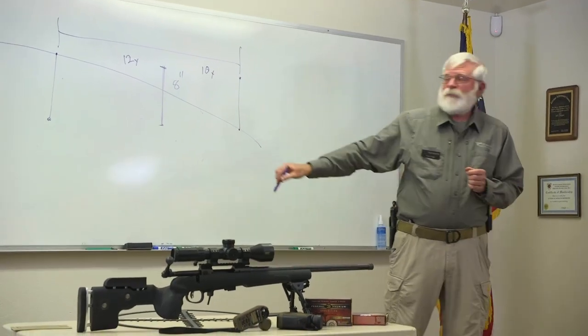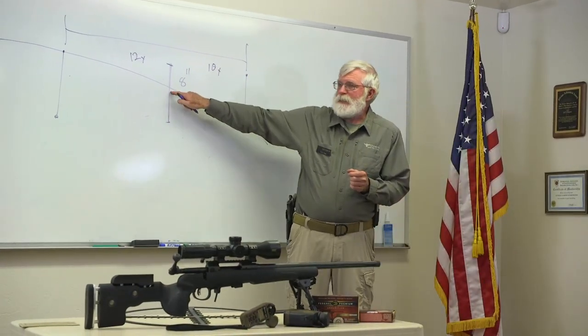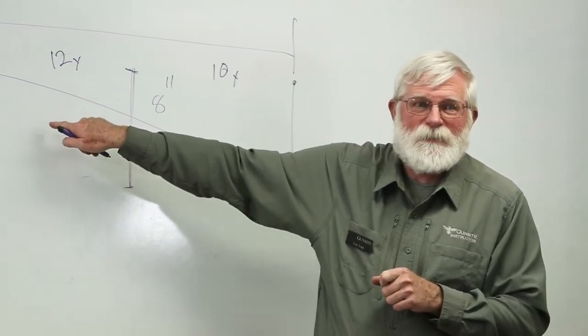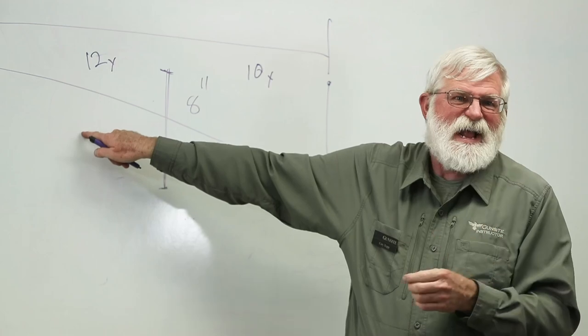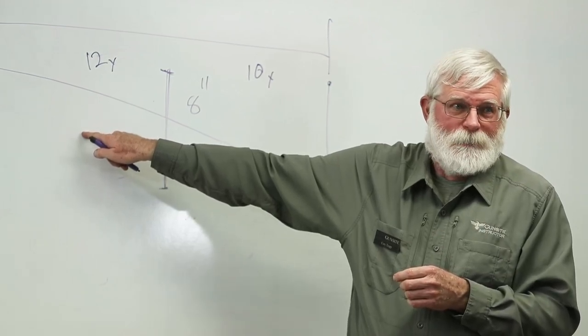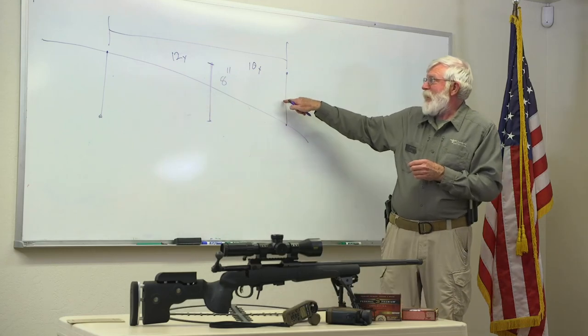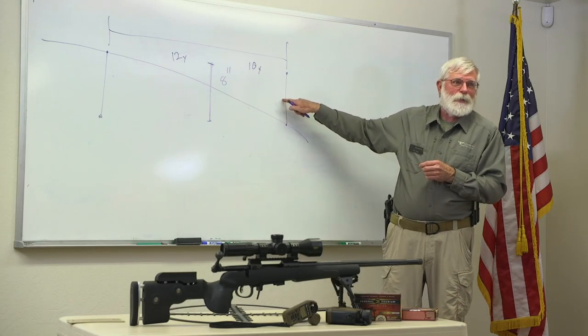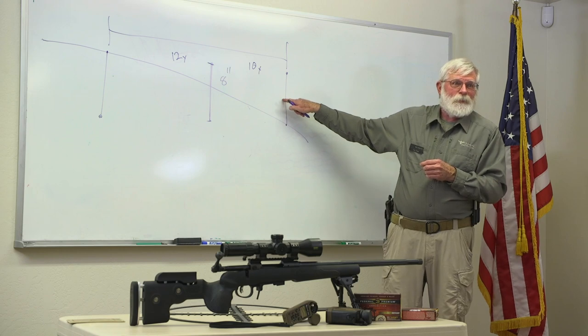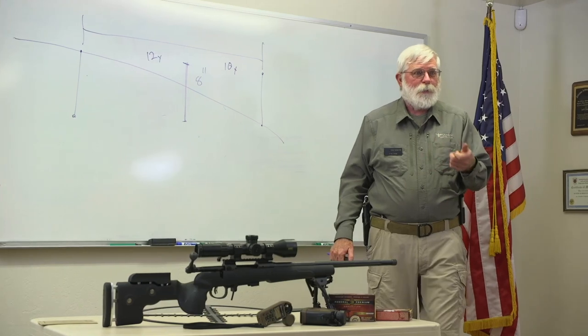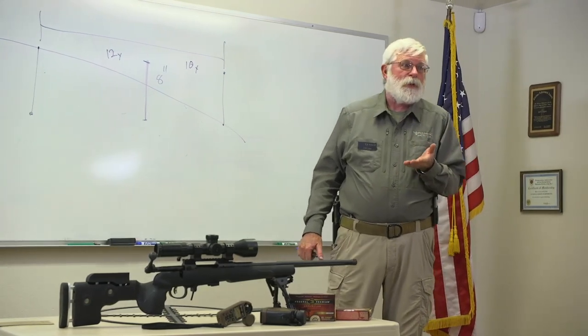That means if you range it at exactly 600 yards and dial 600 yards, if the target is standing at 588 you miss—you went over the top of it. And if the target is standing at 612 yards you miss—you went underneath it. This means a certain amount of precision is required in the range once we exceed point-blank.